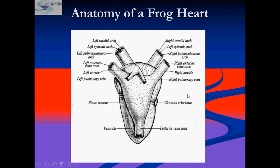The ventricle contracts and sends oxygenated blood to the brain from the left ventricle — this is almost pure blood that reaches the brain. The skin and lungs receive nearly pure blood from the right auricle through pulmo-cutaneous arteries, from which fresh oxygen can be picked up. The blood that passes through the aortic arches is mixed but still has enough oxygen to supply the rest of the body.